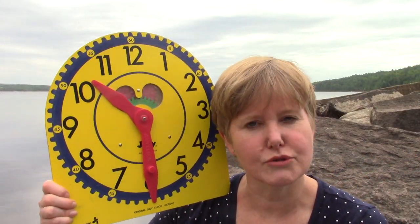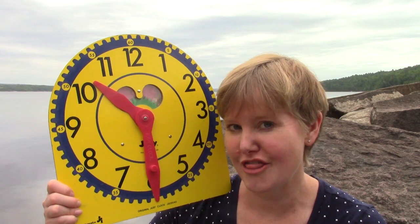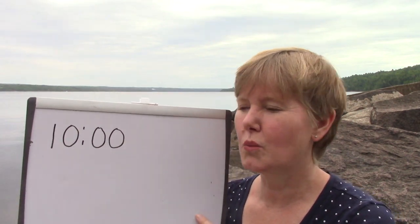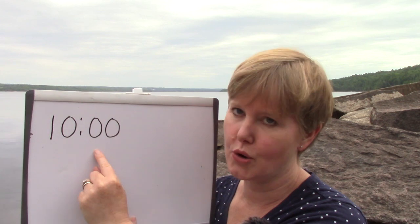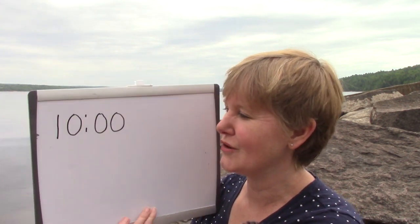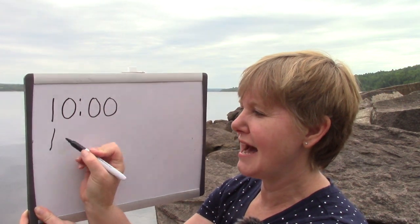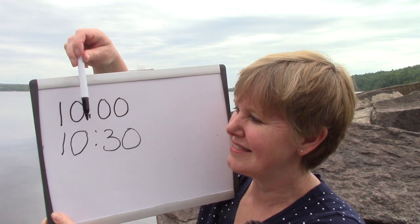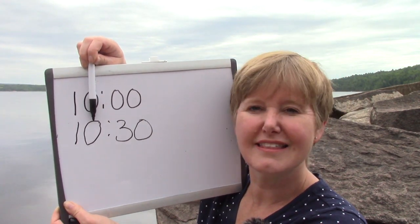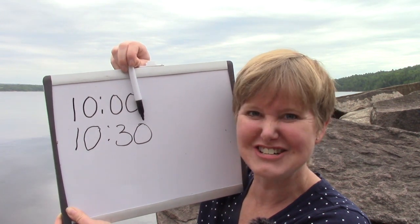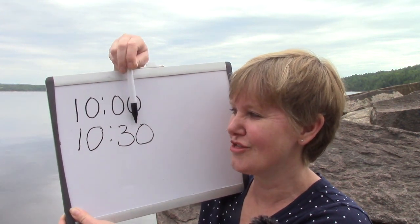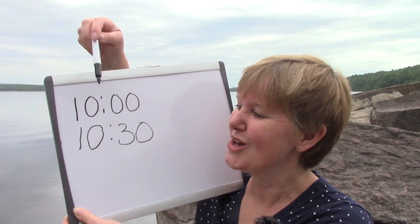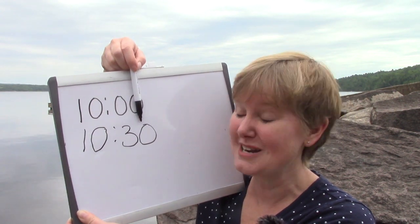Have you ever wondered how to write down the time for 10:30? When it is 10 o'clock, we have 10 with no minutes. But if we are going to write 10:30, we are going to have 10 with 30 minutes. This side of the colon shows us the hour, and the other side shows us the minutes. 10:30 or half past 10. When you are writing down the time, you put the hour on this side and how many minutes have passed on the other.